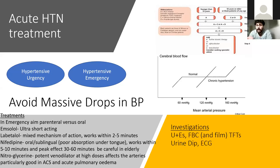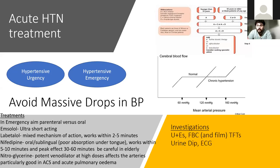For normal patients, autoregulation maintains cerebral perfusion pressure despite differences in mean arterial pressure. In chronically hypertensive patients, the curve shifts right — so at very high blood pressures they still get good organ flow. But this means if you drop the blood pressure precipitously, you can quickly lead them to ischaemia, because they need a higher blood pressure to achieve the same perfusion pressure to that organ. This is why dropping blood pressure very quickly is very dangerous — you can cause strokes and heart attacks not because the blood pressure was raised, but because of the rapid drop.